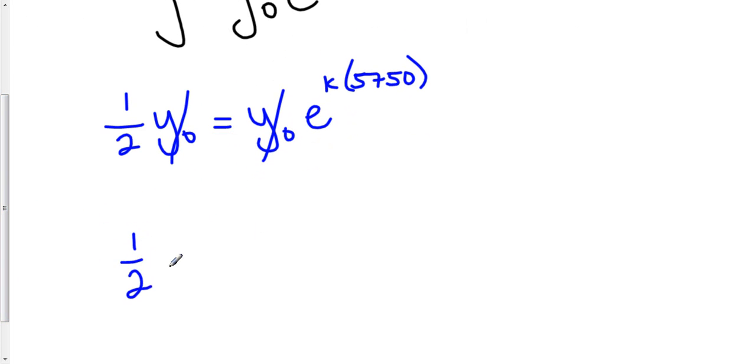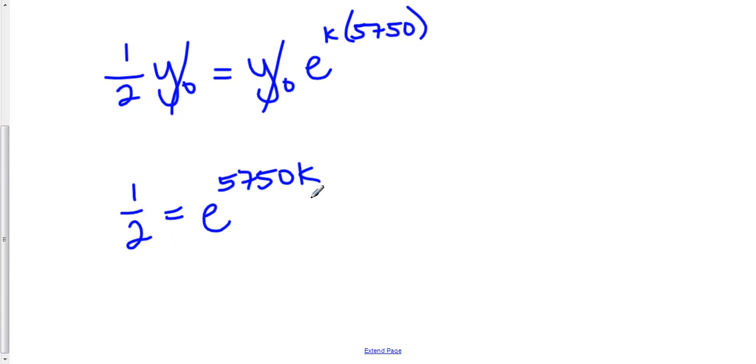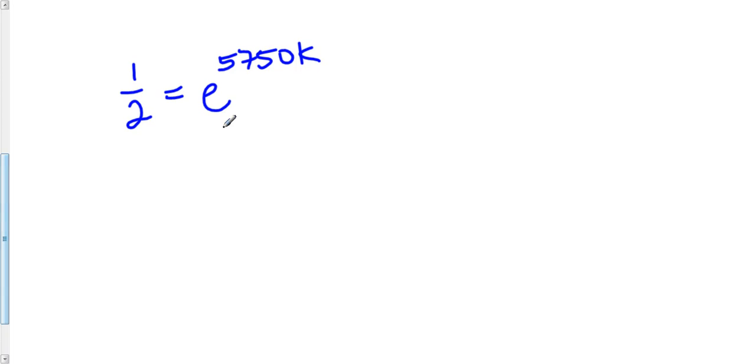So now we have one-half is equal to e to the 5750 k. Now to solve for k, since that's what we're solving for here, the constant of growth, we can take the natural log of both sides. So here we have the natural log of one-half is equal to, when we take the natural log of e to the 5750 k, we have the natural log of e to the 5750 k.